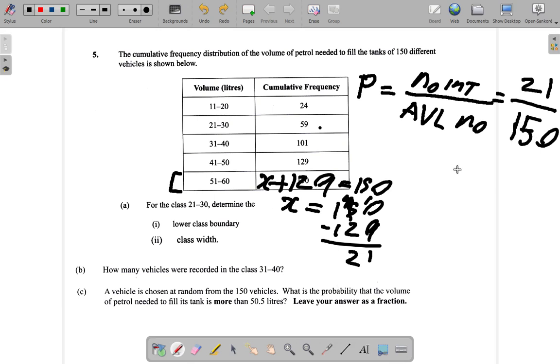Leave your answer as a fraction. What is 21 over 150? It seems as if you could divide down by 3. 3 into 21 goes 7. 3 into 15 is 5. That was 0.